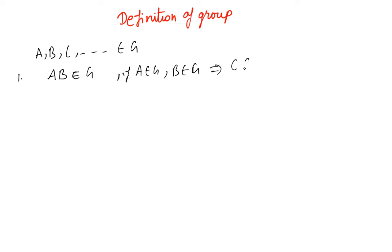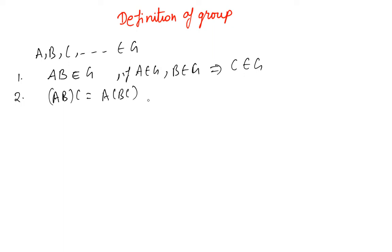If a belongs to G and b belongs to G, then c should also belong to G — that is the first condition (closure). By 'product' we mean some operation between the two elements, not necessarily multiplication. The second condition is associativity: (ab)c should equal a(bc), meaning the product of a and b, then with c, equals the product of b and c, then with a.